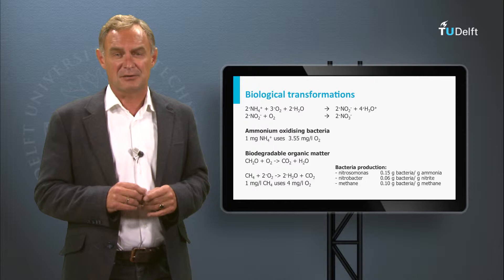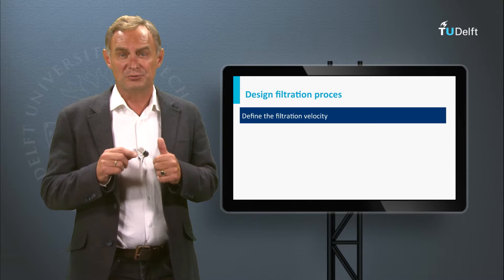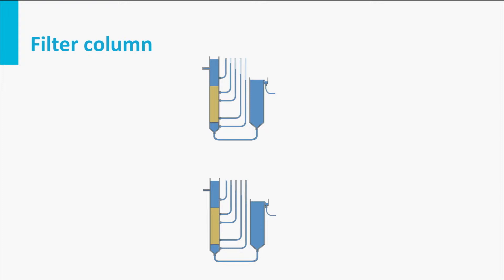To be able to design a filtration process, it is necessary to define the filtration velocity needed to know the total surface area required for filtration, the filter bed height, and the grain size of the filtering material. Therefore, pilot plant testing is performed.